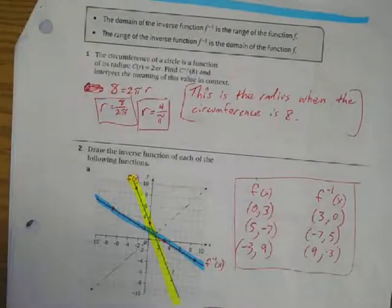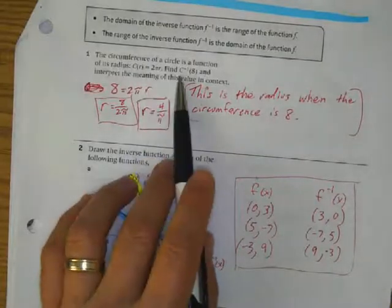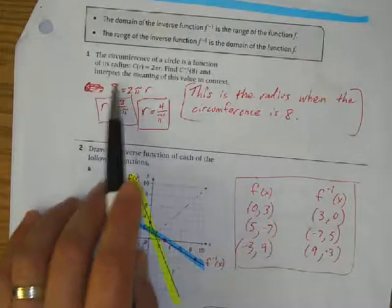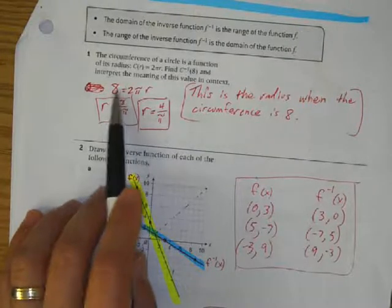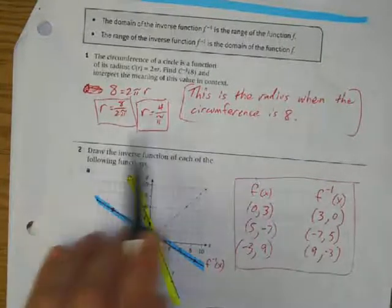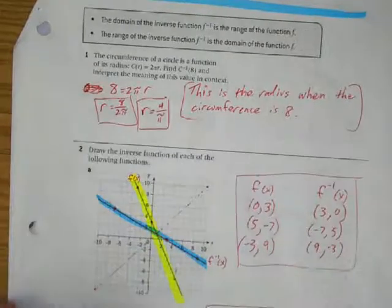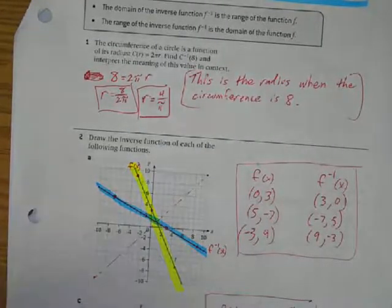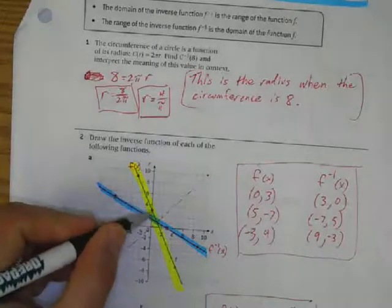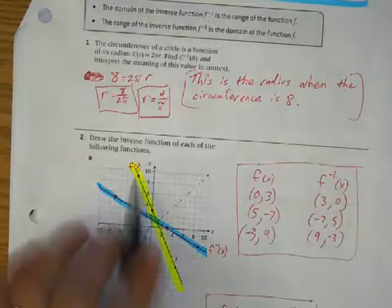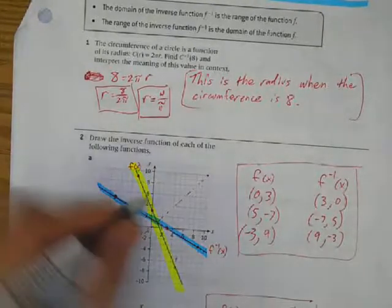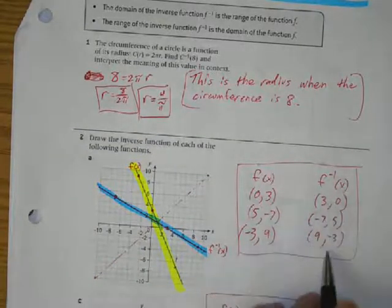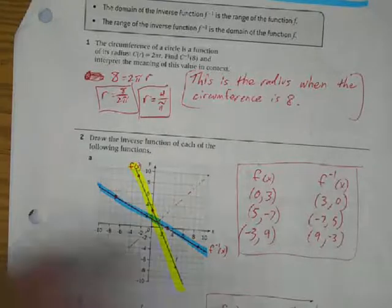To find the inverse of 8 in this equation, I plug in 8 as the input value and then solve for y. To draw the inverse of each function, I found points on the yellow function, switched the x and y values, plotted those new points, and that let me draw the inverse function.